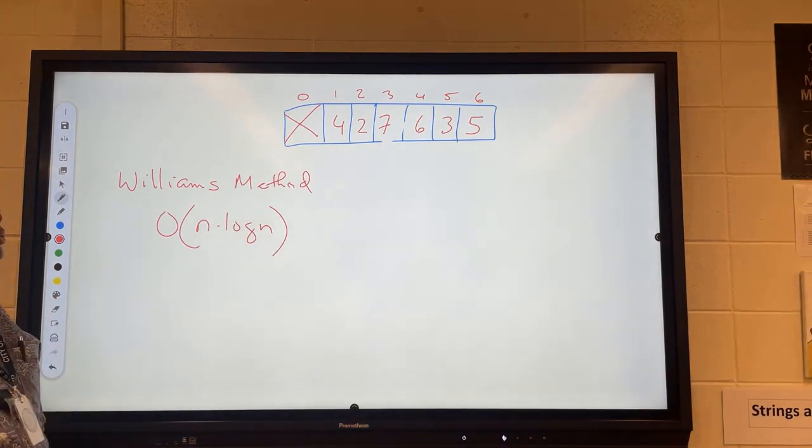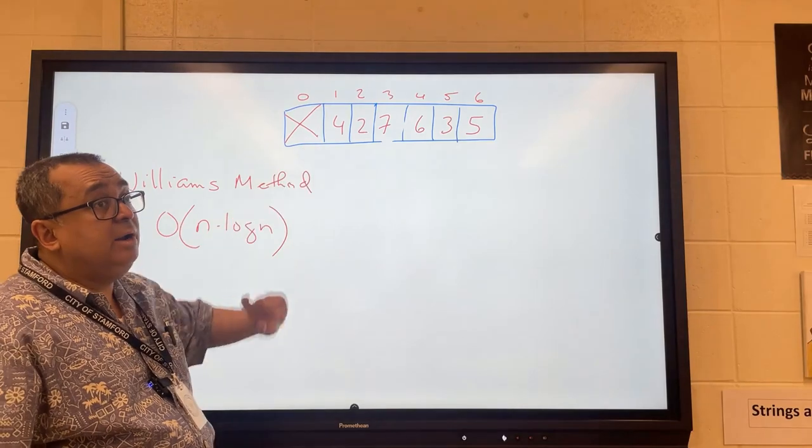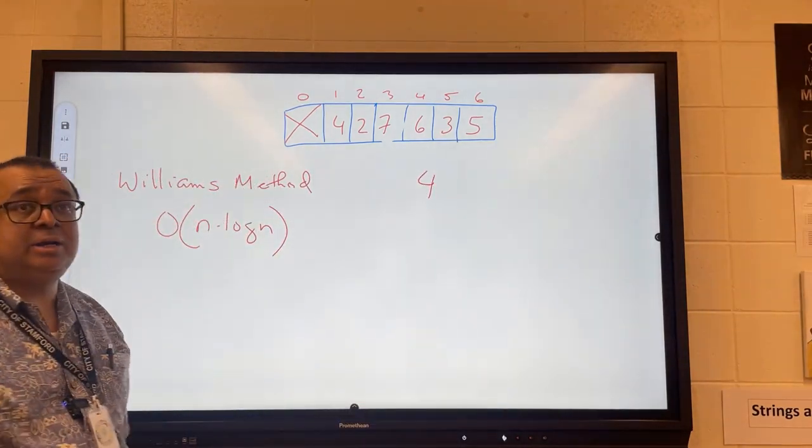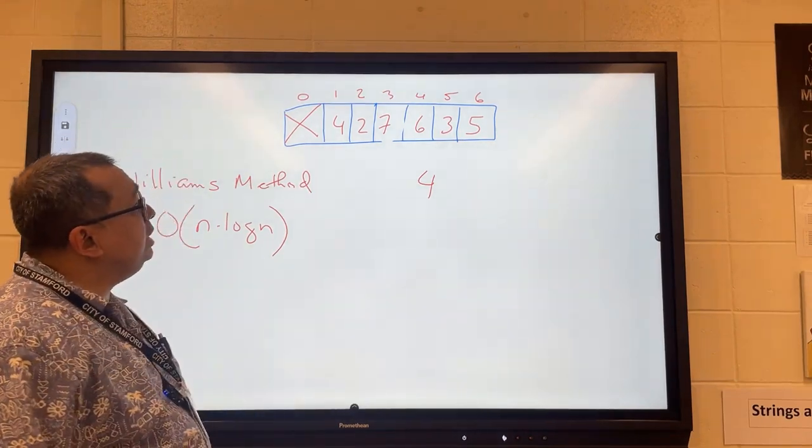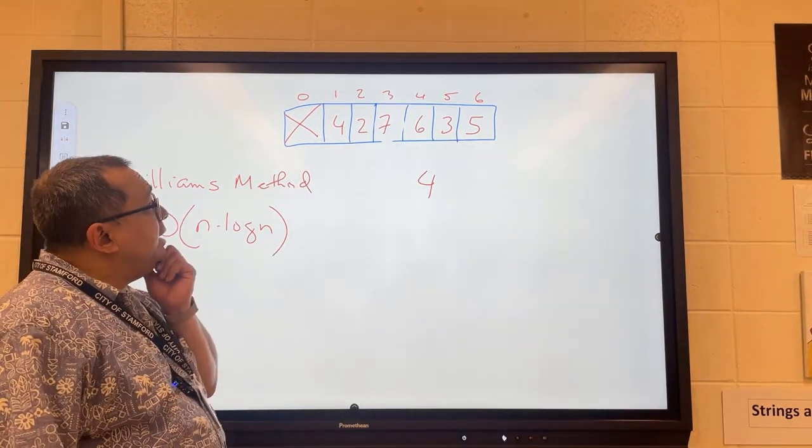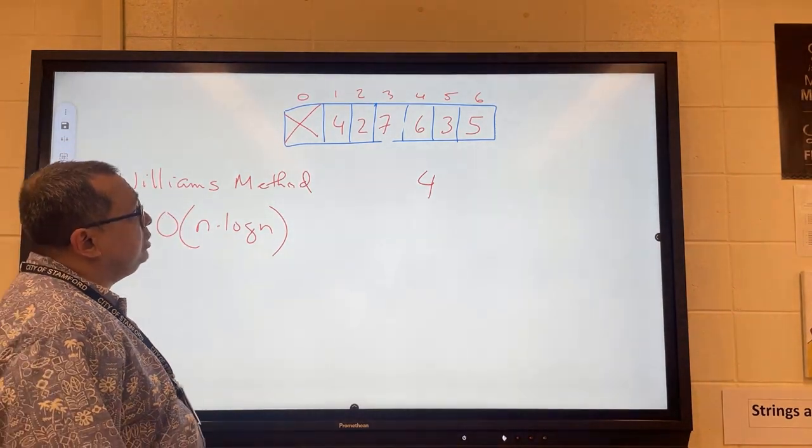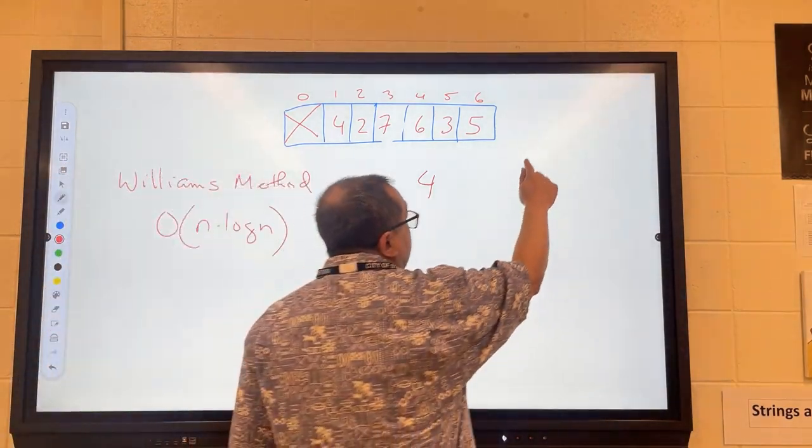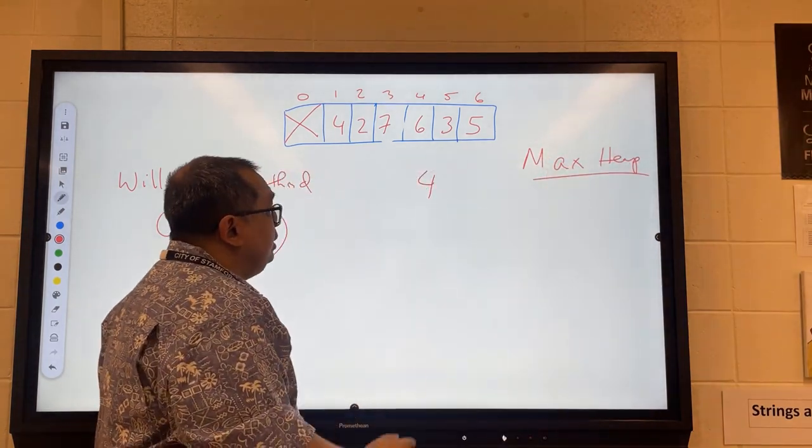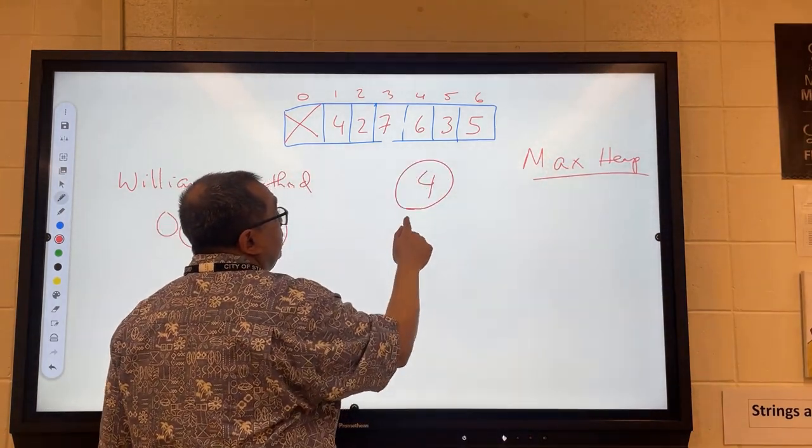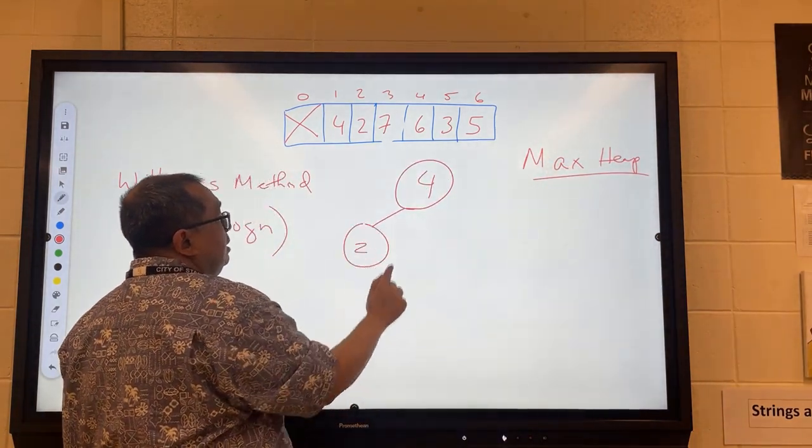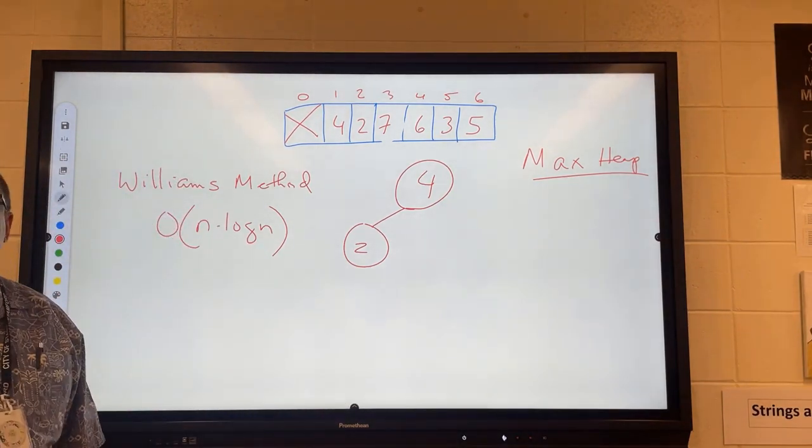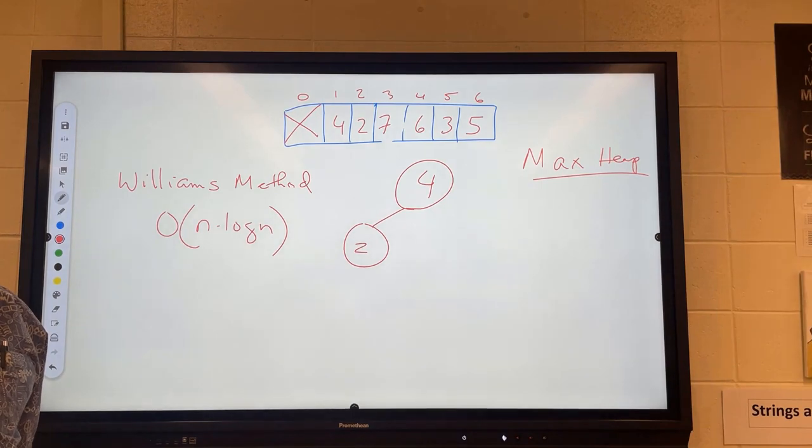So what we're going to do is we're going to start off with the 4 and we're going to just insert that into our heap and that's going to become our initial root of the heap. So we're going to start with the 4 and the next thing we're going to do is we're going to insert the 2. Now we're going to build a max heap and so when we insert the 2 we're going to just insert it right here like that. And what I need to know is do I need to make any adjustments on this heap to restore the heap properties? We're good there.